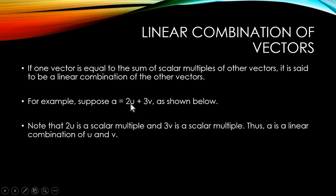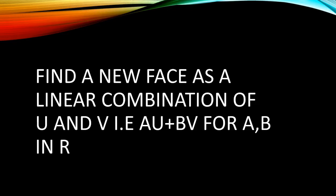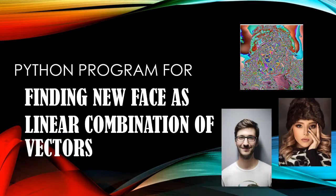This new vector a will be called the linear combination of vectors u and v, as it is a sum of scalar multiples of u and v. Two vectors, scalar multiples — if you do the sum you get a new vector, which is the linear combination of the original vectors. Here we are working with faces, not simple vectors, so those faces will first be converted to vectors and then we will find the new face.